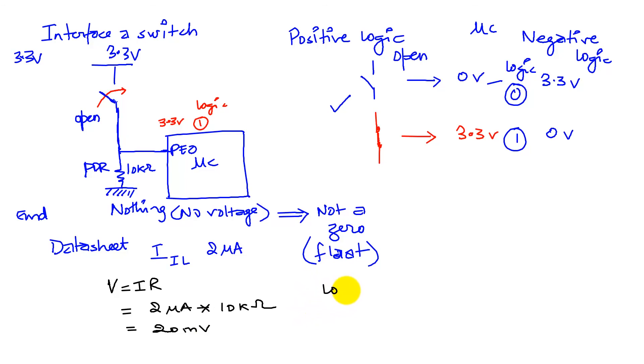Remember that for a logic 0, the computer—our launch pad—reads anything between 0 up to 0.8 volts as a logic 0. So this 20 millivolts is way down near zero, so we will record a 0 in response to this 20 millivolts.